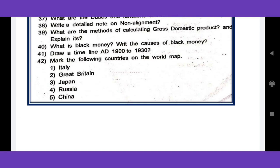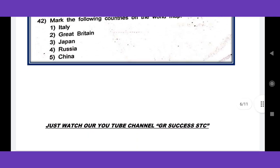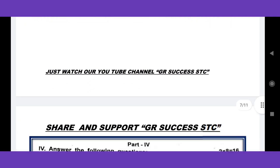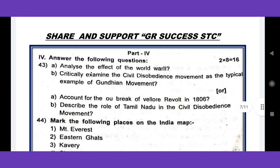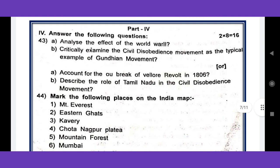The world map includes five places: Italy, Great Britain, Japan, Russia, and China. The next 8-mark question is: analyze the effects of World War II. The critical exam question is the Civil Disobedience Movement — most important. The other questions include: the outbreak of the revolt, and the Tamil Nadu Civil Disobedience Movement. These are the two main questions.